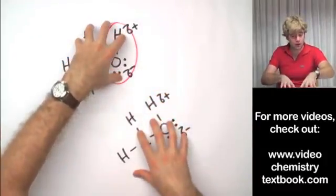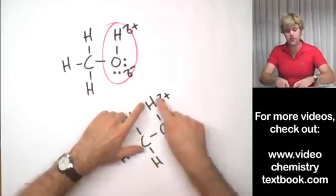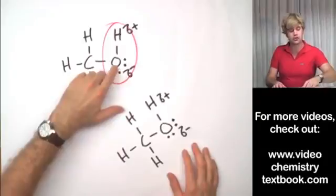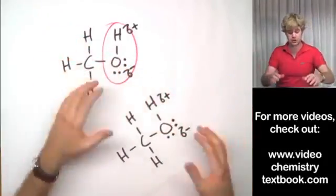The hydrogen bond forms between these two molecules when the positively charged hydrogen on this molecule gets attracted to the negatively charged oxygen on this molecule. Remember that opposite charges attract.